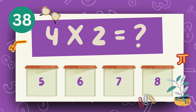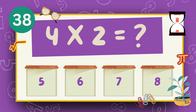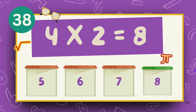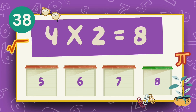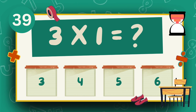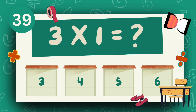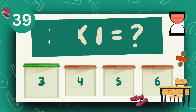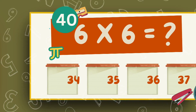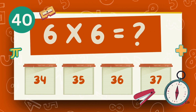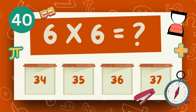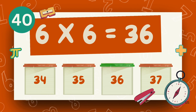What is 4 multiply 4? What is 4 multiply 2? The answer is 8. What is 3 multiply 1? The answer is 3. What is 6 multiply 6? The answer is 36.